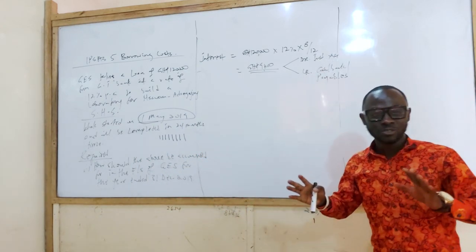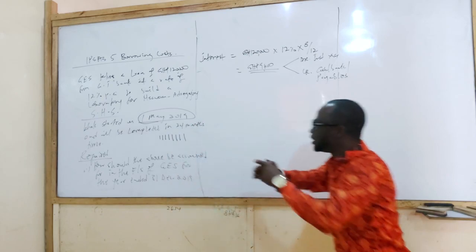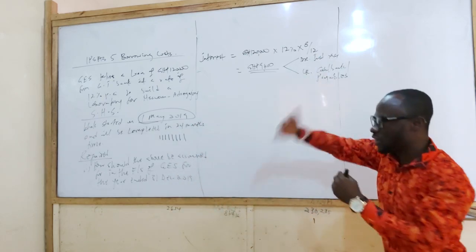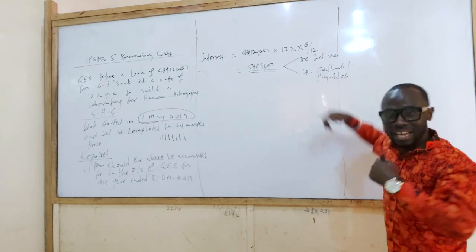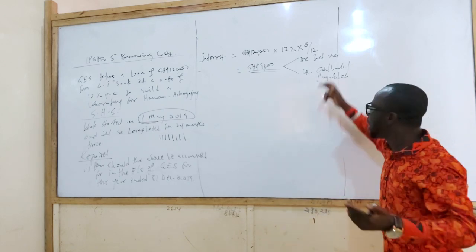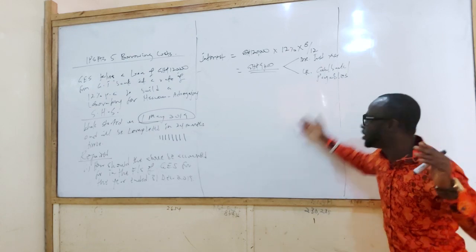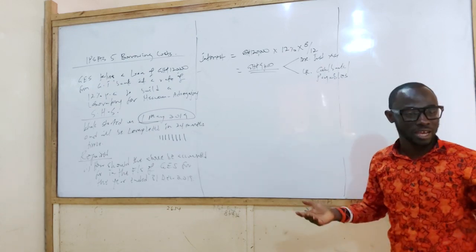So the interest must be capitalized. So we debit infrastructure property plant and equipment. And then credit what? The cash if we have paid it. Bank if we have paid it. But chances are we have not paid it. So we credit what? Payables.